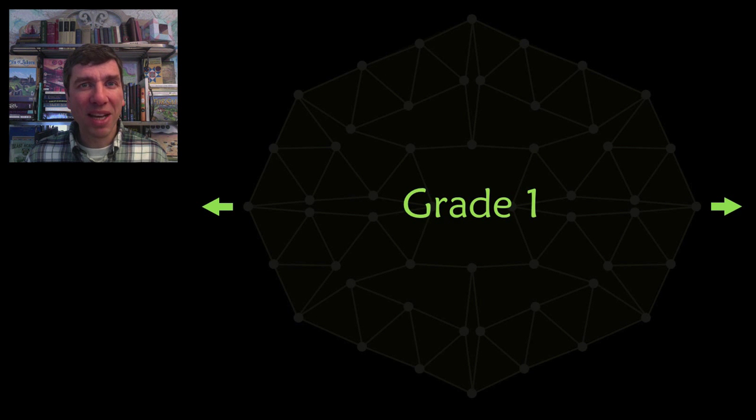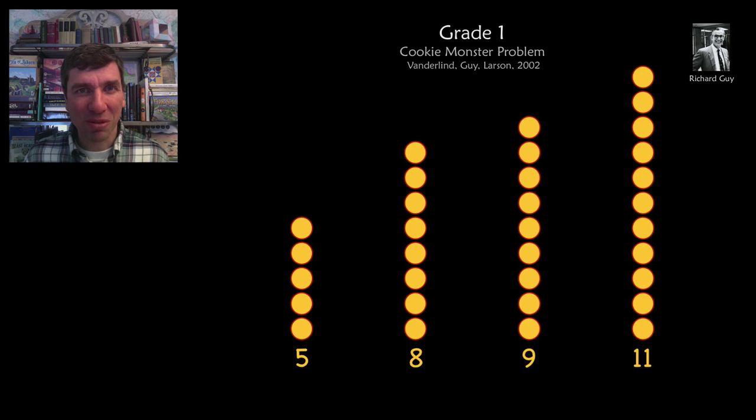The Grade 1 unsolved problem is the Cookie Monster problem from Richard Guy. Here we have 4 jars with 5, 8, 9 and 11 cookies.